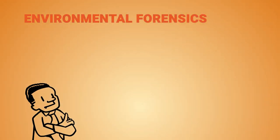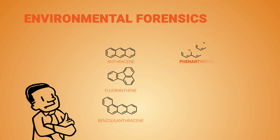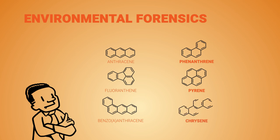PAHs are a class of chemicals that occur naturally in coal, oil, and gasoline, and which are also produced when those chemicals are burned. They're widespread and persistent in the environment and have high toxicity. Therefore, it's frequently necessary to distinguish site PAHs from background using environmental forensics techniques.